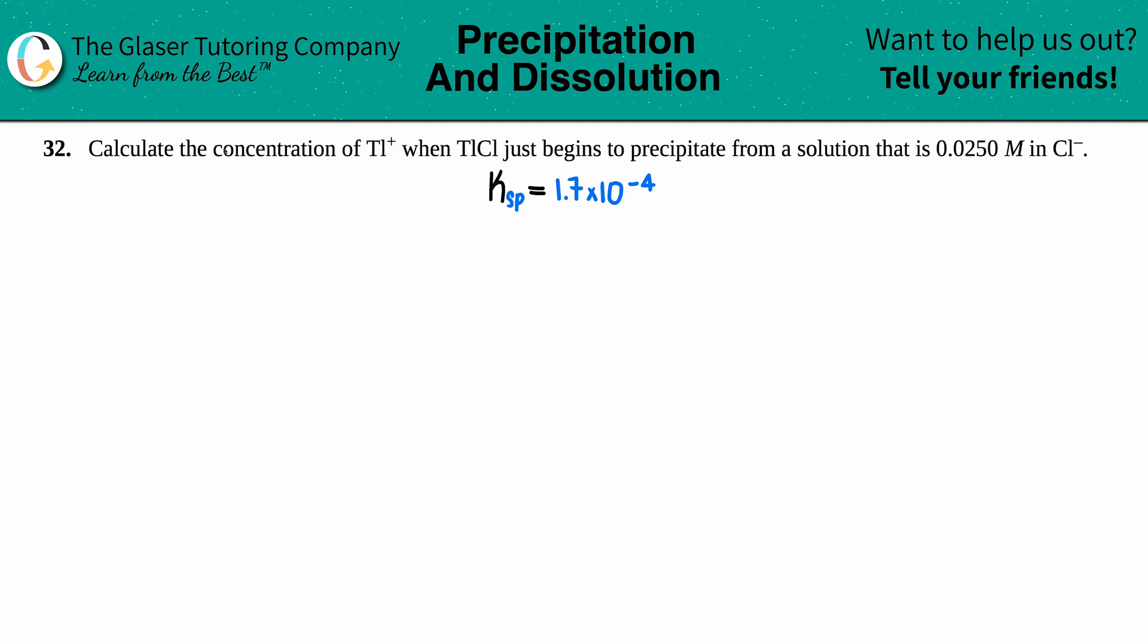Number 32: Calculate the concentration of TI+ when TICl just begins to precipitate from a solution that is 0.0250 molarity in Cl-. Okay, so we're talking about precipitation, which means we're basically going to...